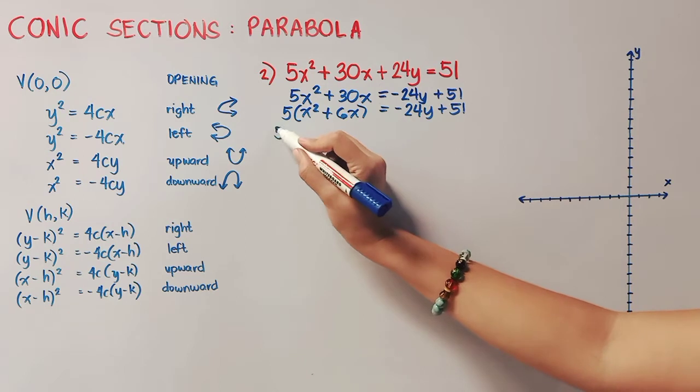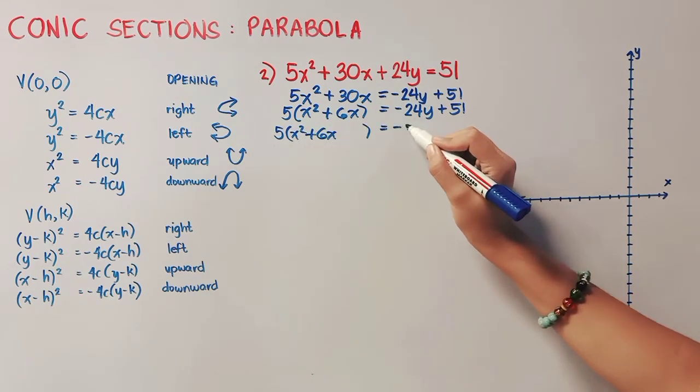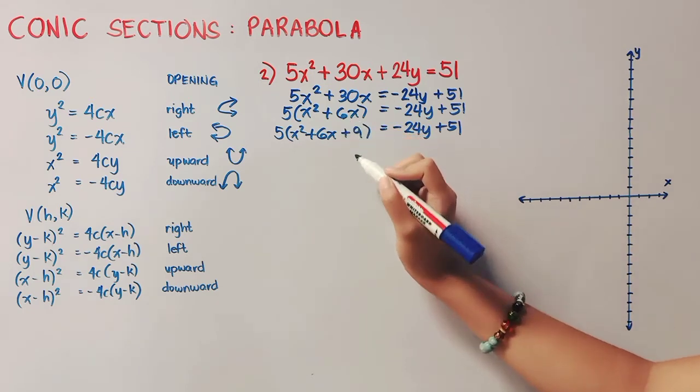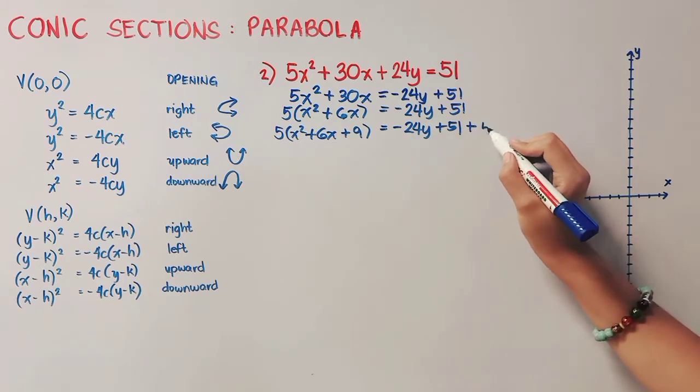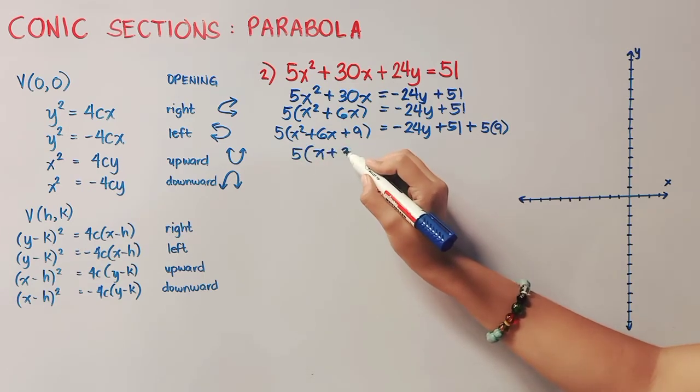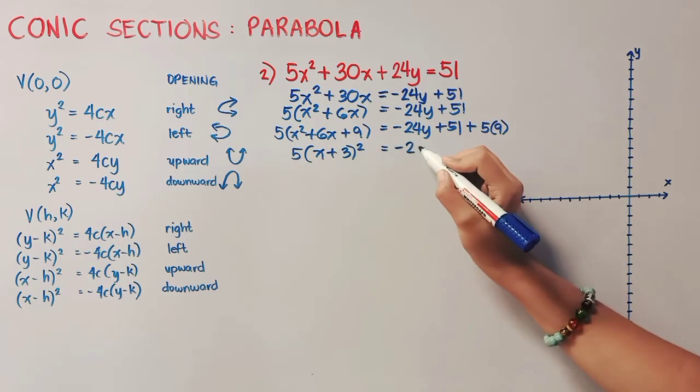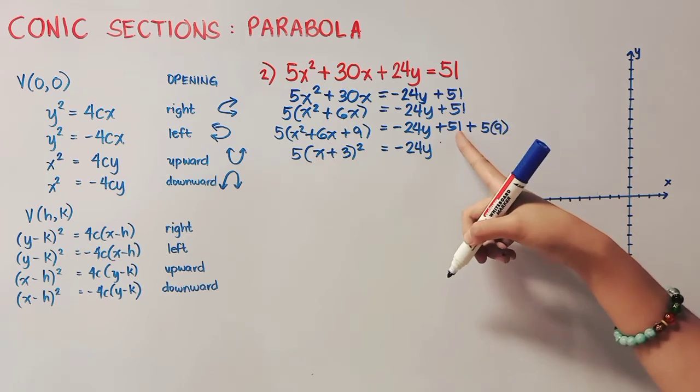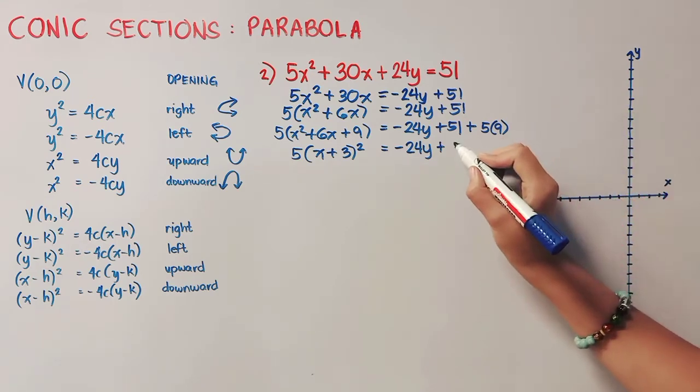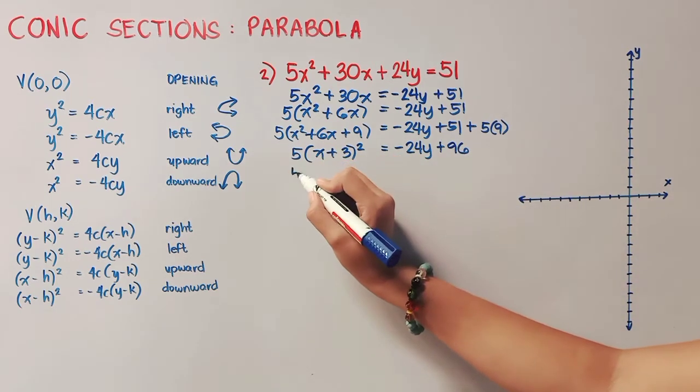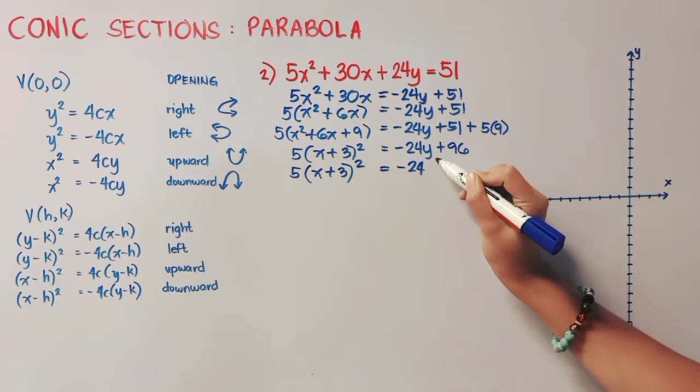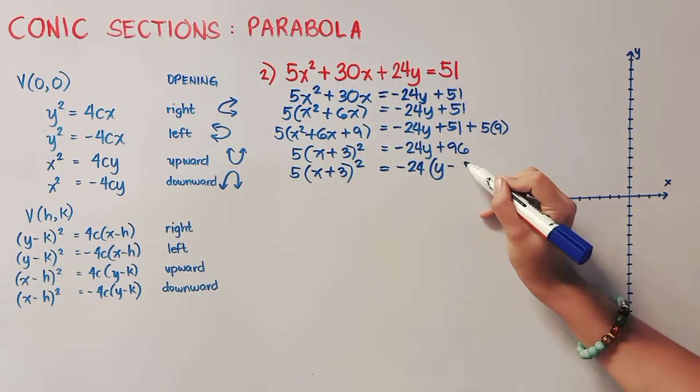Now we are ready to complete the square. Before that, we will copy first the following. Focusing on our middle term, 6 divided 2 is 3. 3 squared is 9. Don't forget to also write it on the right side. But there's still 5 outside. So we will add 5 times 9. We are now ready to factor this. It's x plus 3. Again, that is 6 divided 2, 3. And then 24y, 51 plus, this is 45. So that is 96. Now we can still factor the right side because there is a common factor which is negative 24. So we will take it outside. What's left is y. And then 96 divided negative 24 is negative 4.